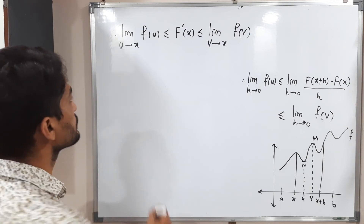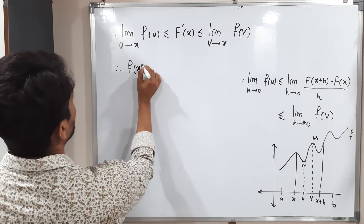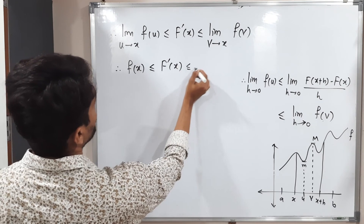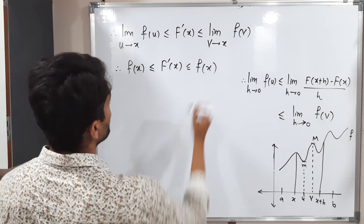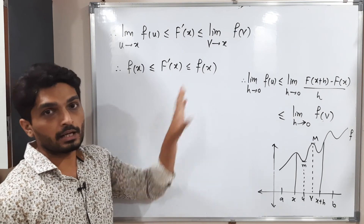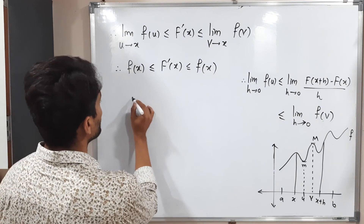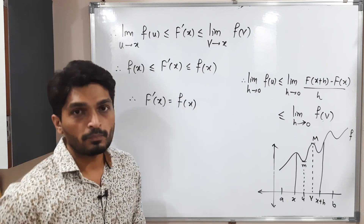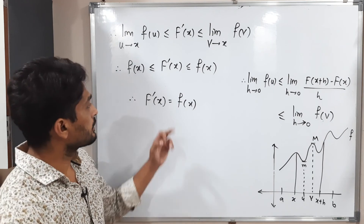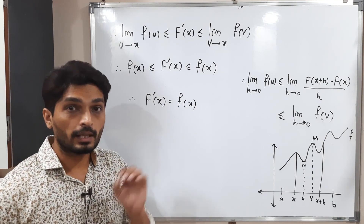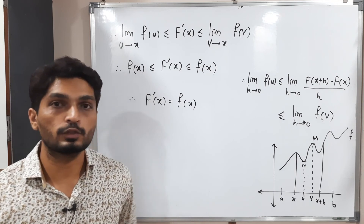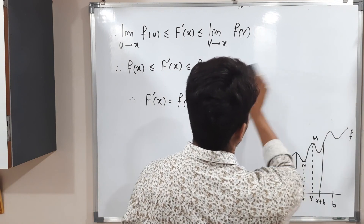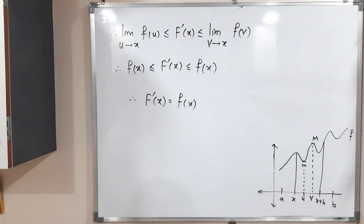Applying the limit, we get f(x) ≤ F′(x) ≤ f(x). Since the first and last terms are equal, by the squeeze theorem F′(x) = f(x). Therefore, small f is the derivative of capital F, or equivalently, capital F is the anti-derivative of small f. This completes the proof of the First Fundamental Theorem of Calculus.